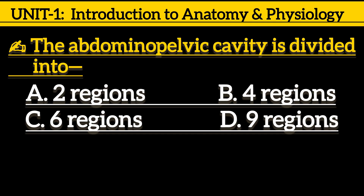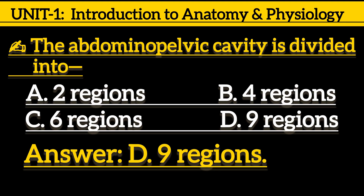Next one is, the abdominopelvic region is divided into how many regions? Option B, 4 regions; option C, 6 regions; option D, 9 regions. Correct answer is option D, 9 regions.